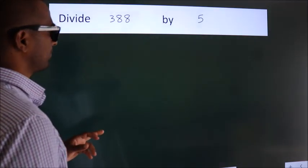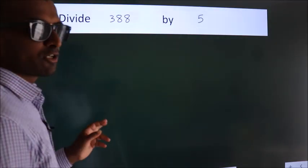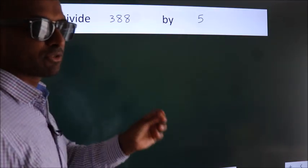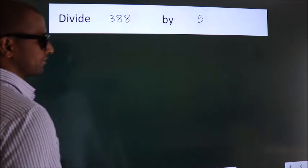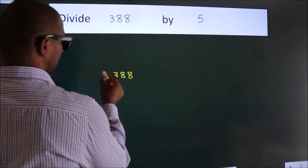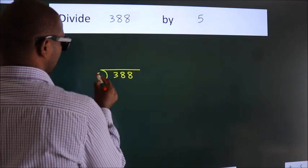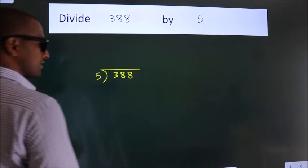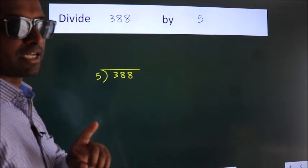Divide 388 by 5. To do this division, we should frame it in this way. 388 here, 5 here. This is your step 1.